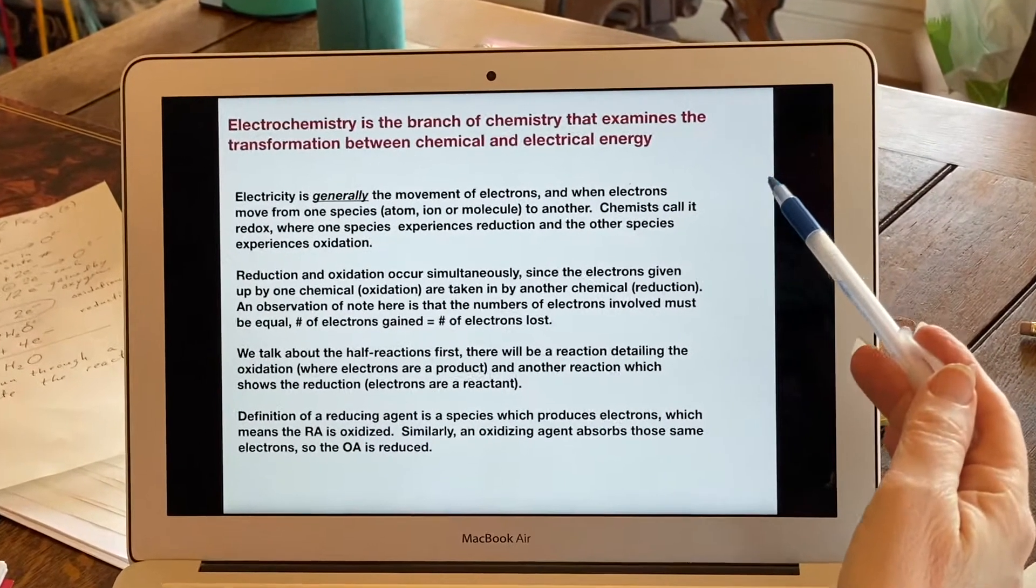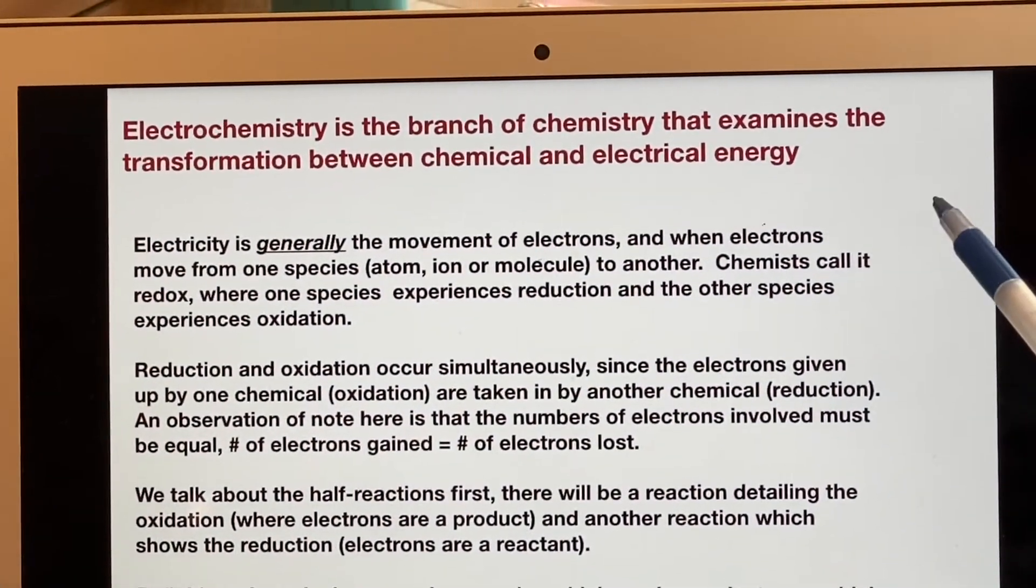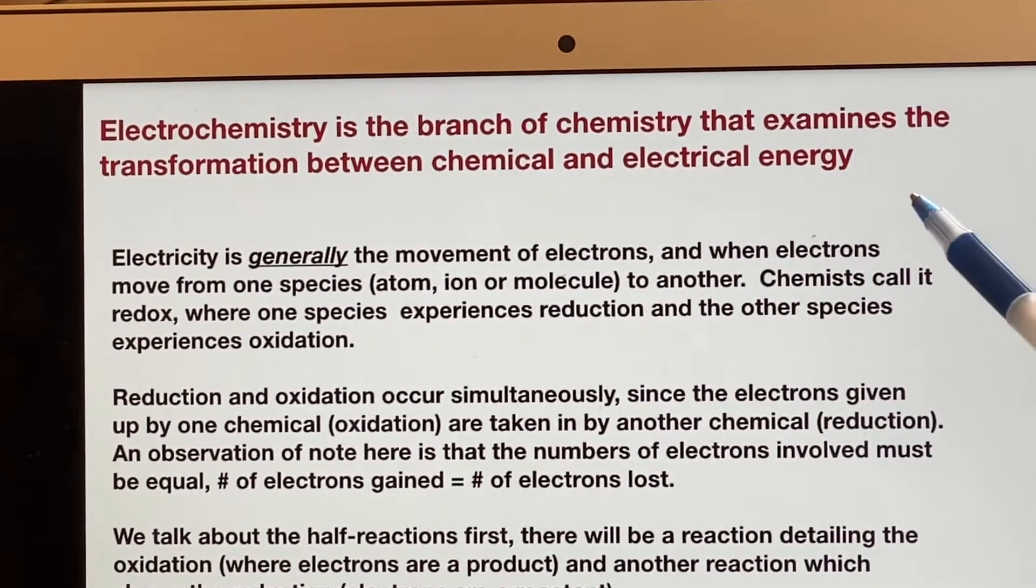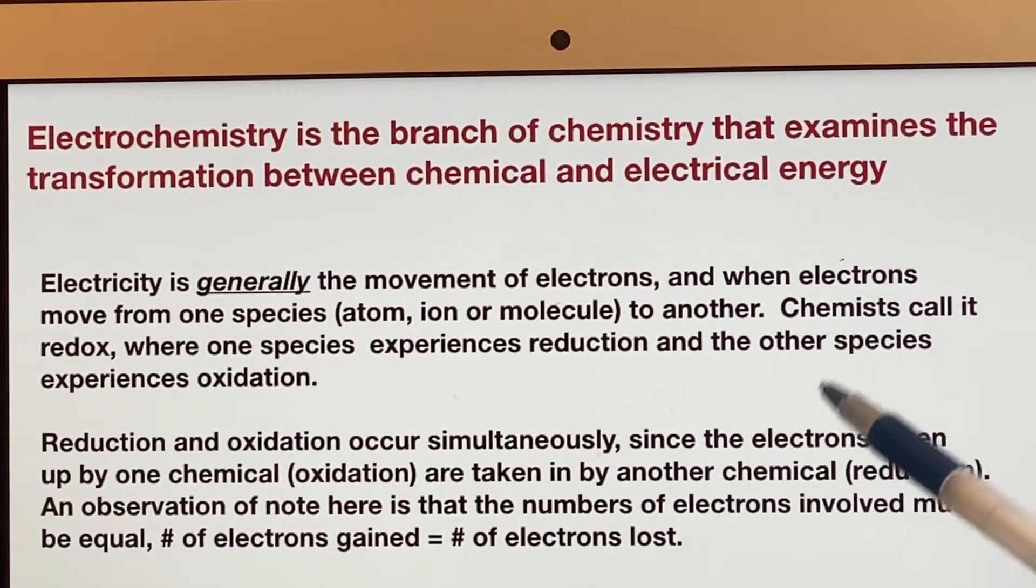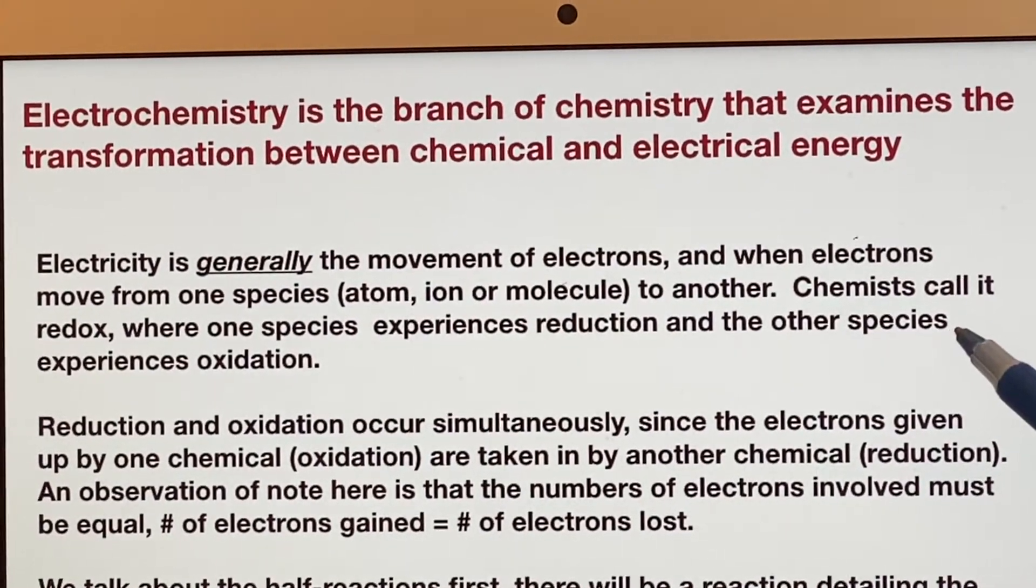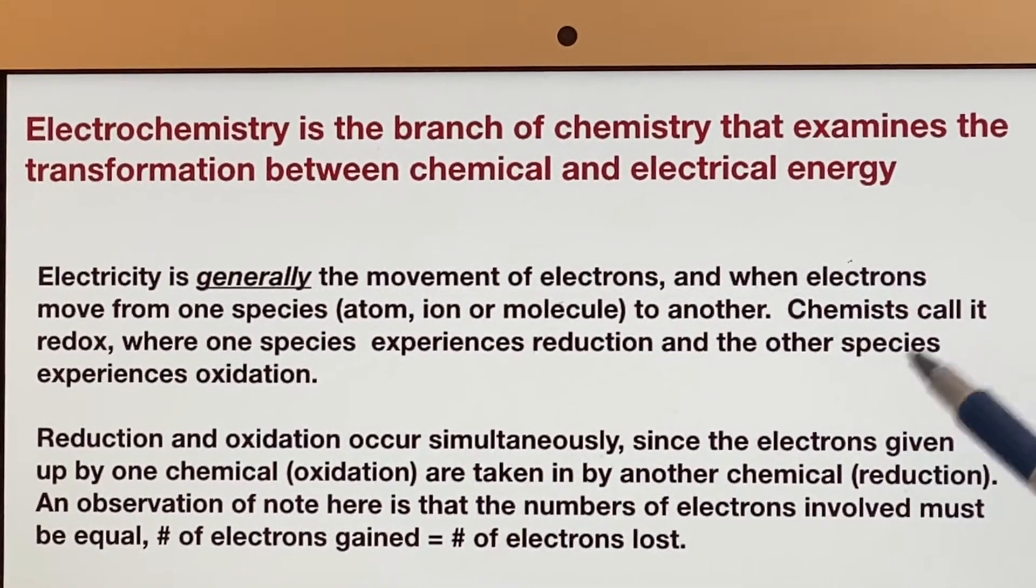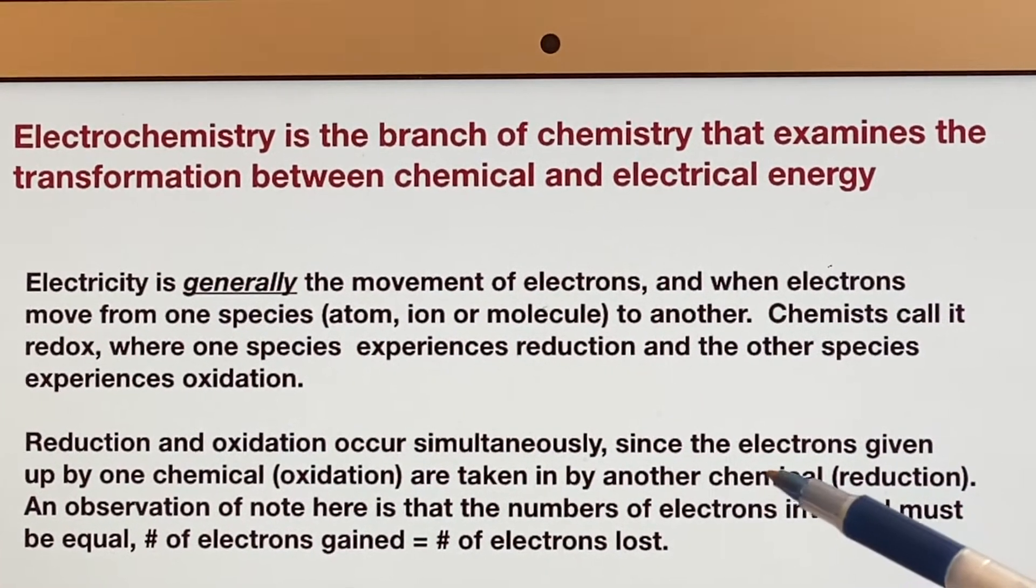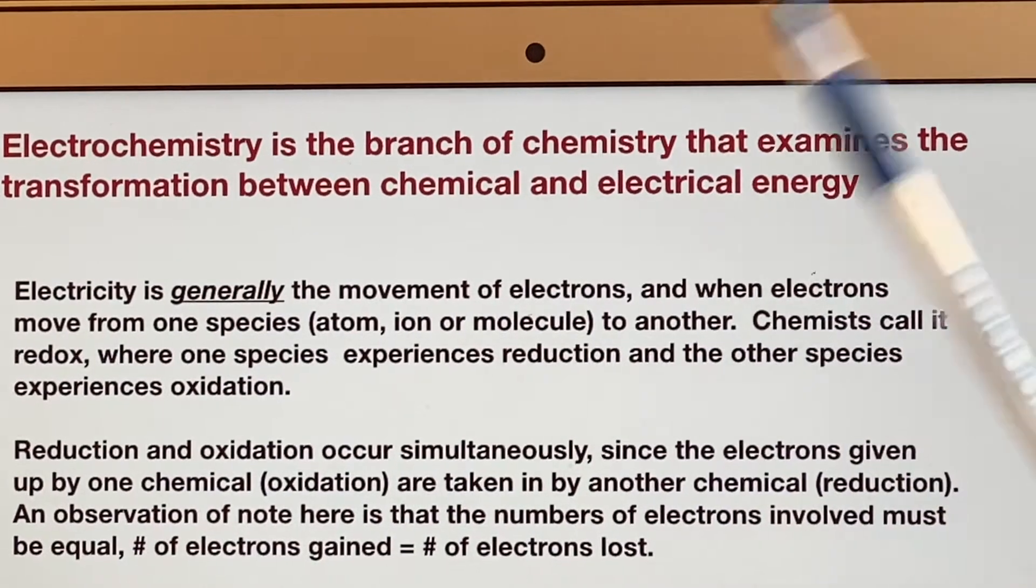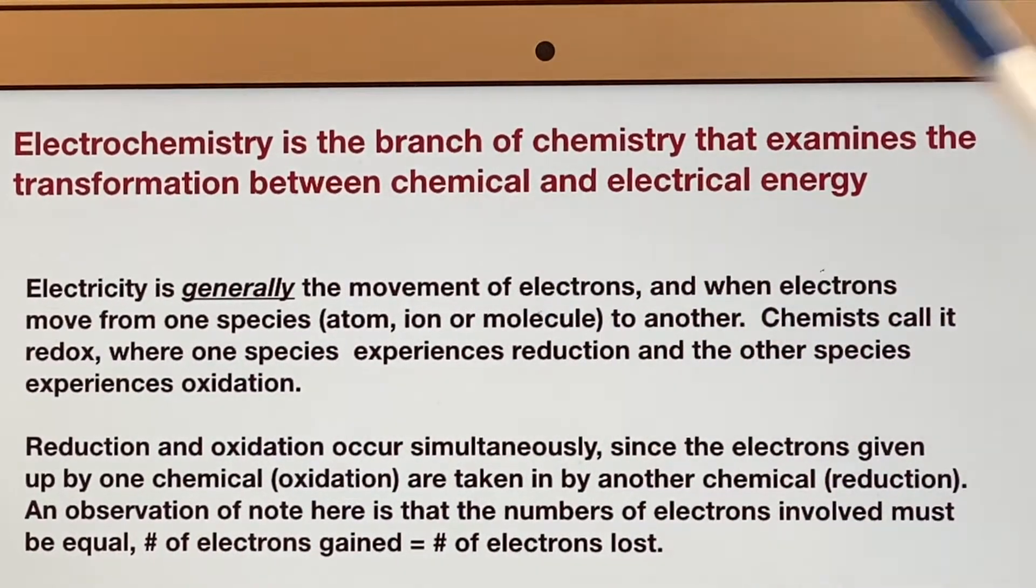This whole chapter is on electrochemistry, the branch of chemistry where we're looking at the transformation specifically between chemical and electrical energy. You are familiar with the fact there are many different types of energy. It turns out that it is reasonably interesting to go to the effort of making electrical energy out of chemical energy.